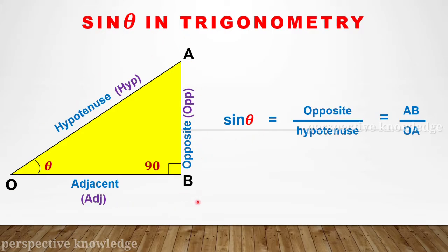If we have a right-angle triangle O, A, B — where angle B is 90 degrees, making it a right angle — and the angle at O is theta, we can find sin theta. Sin theta is equal to the opposite side divided by the hypotenuse.